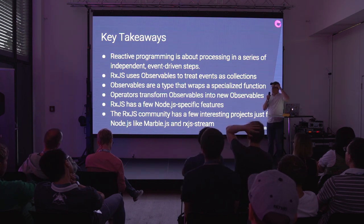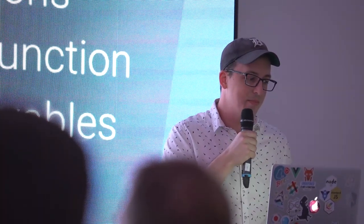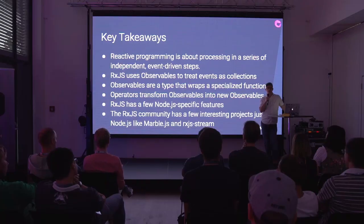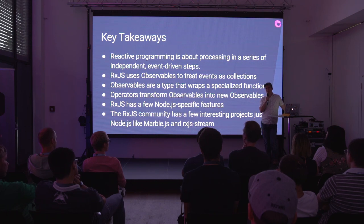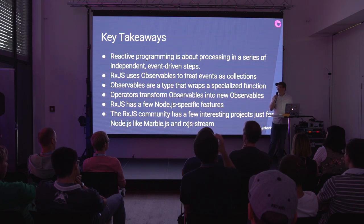RxJS uses observables to treat events as collections — basically collections of events or values over time. Observables are just specialized functions — a type that wraps a function. They don't do anything until you subscribe to them. A lot of people try to compare them to promises, but promises are different: they're multicast, eager, not lazy — they're not going to wait for you to call something on them. Observables are effectively functions you need to subscribe to in order to execute.